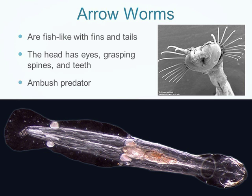Arrow worms — chaetognaths — don't look like worms; they resemble small fish, having fins and a tail. They have whisker-like structures used to detect vibrations and capture food, bringing prey toward their central mouth. They have eyes and are ambush predators, lying in wait before jolting out to grab prey. Their tail is nearly transparent with a visible outline, and they have fins at top and bottom.